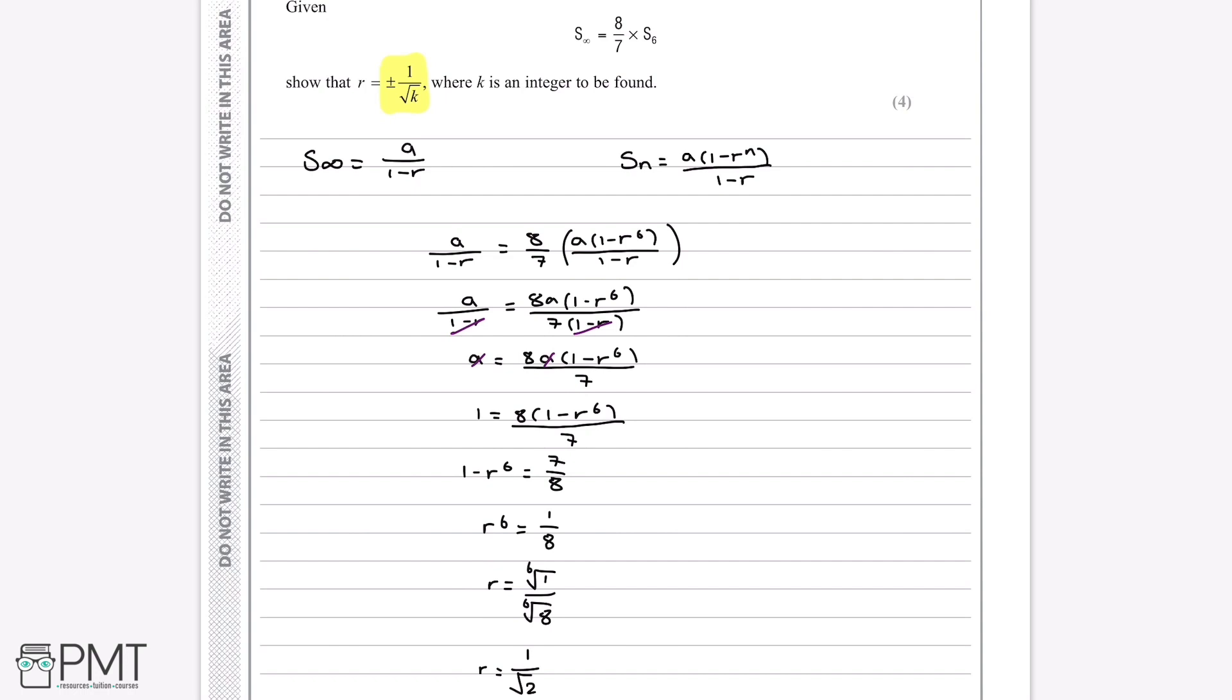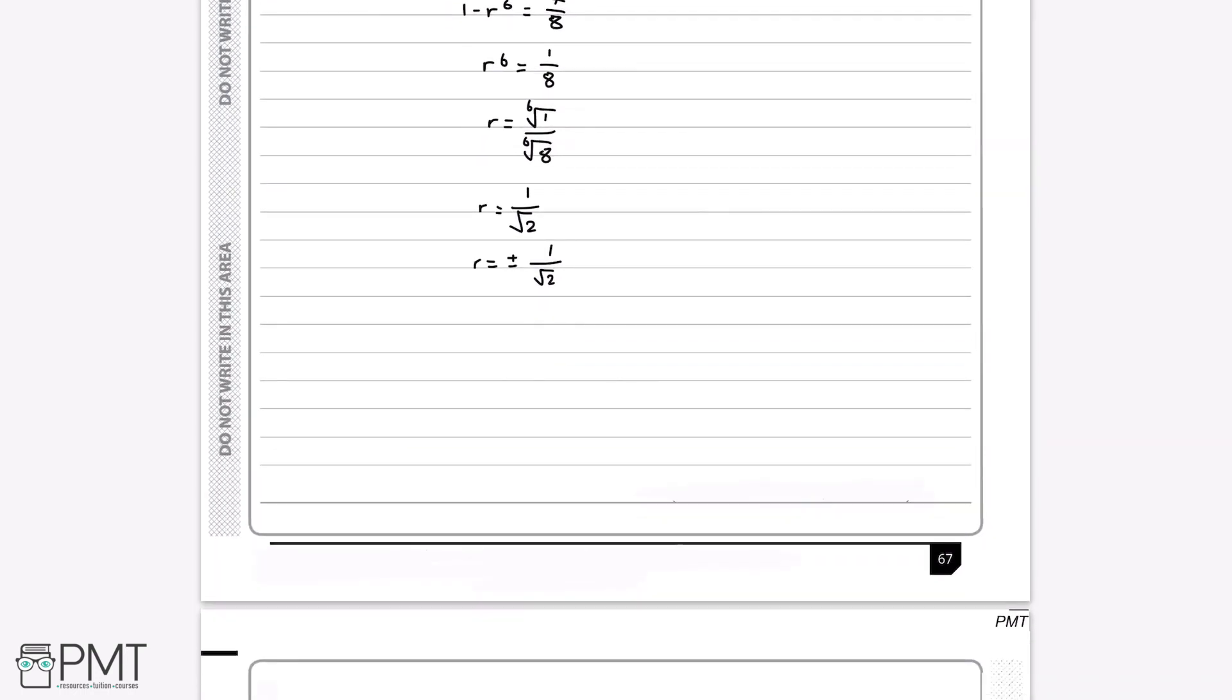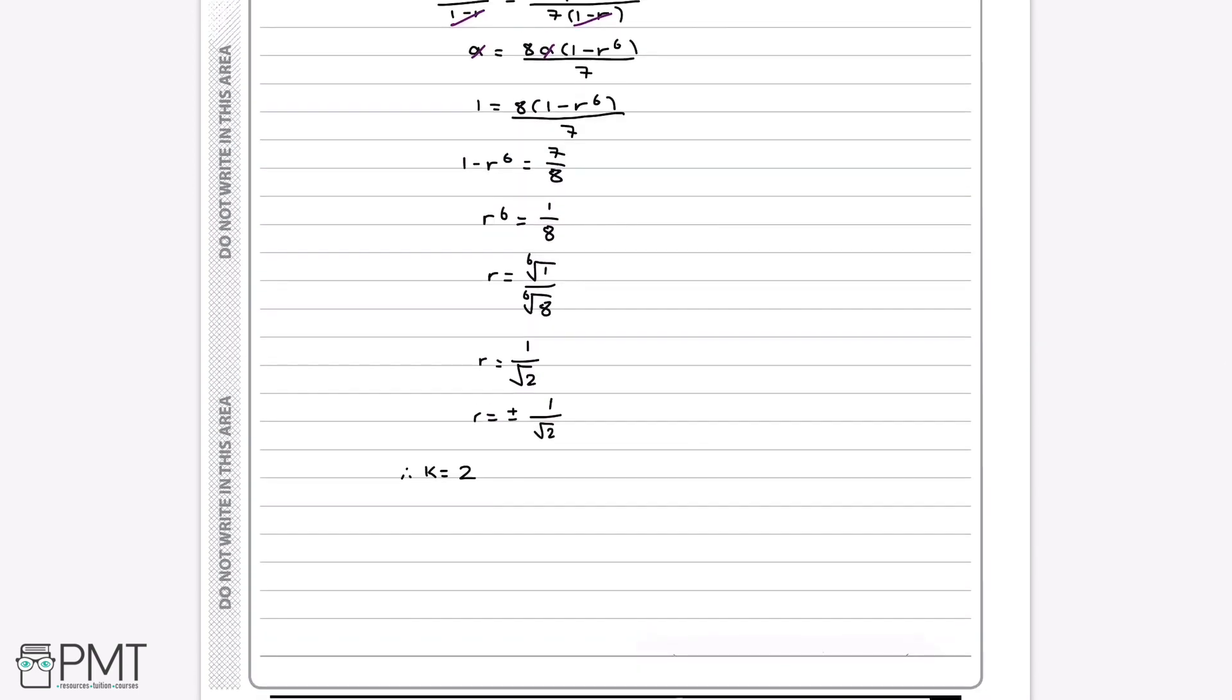And so we can say, to be a bit more specific, that therefore k is equal to 2. And this will get us our final marks, because we've solved the question when we've told them that k is equal to 2.